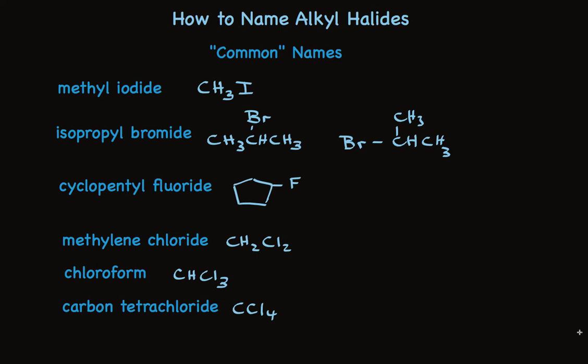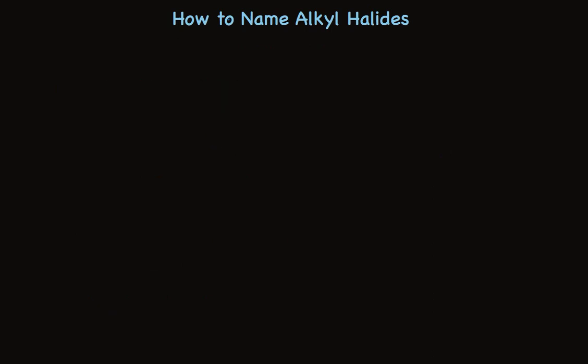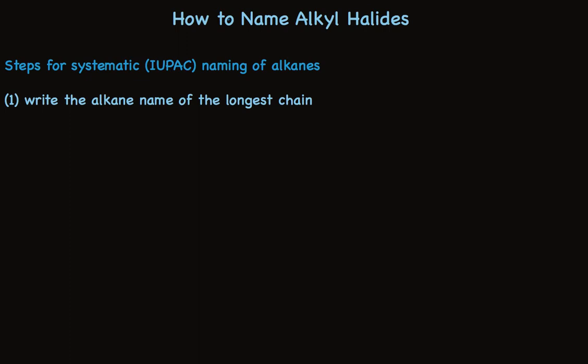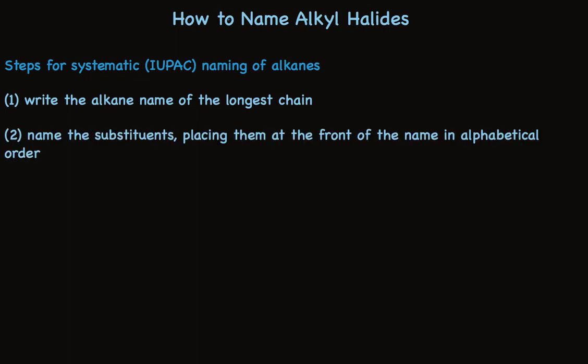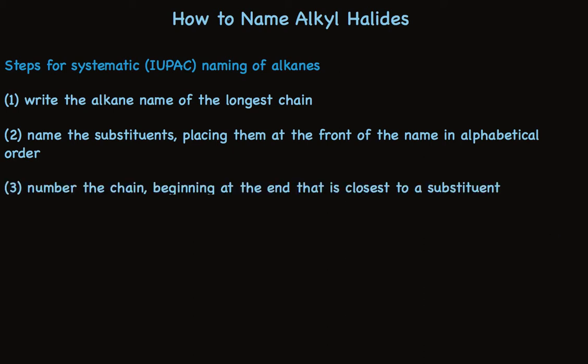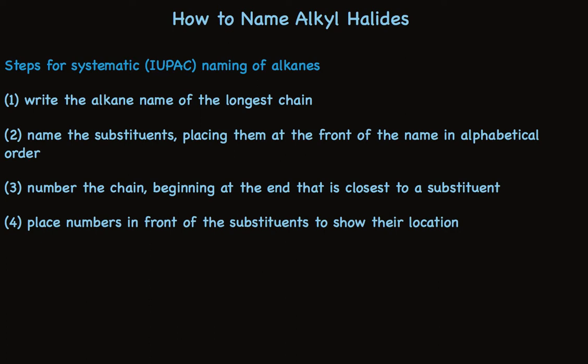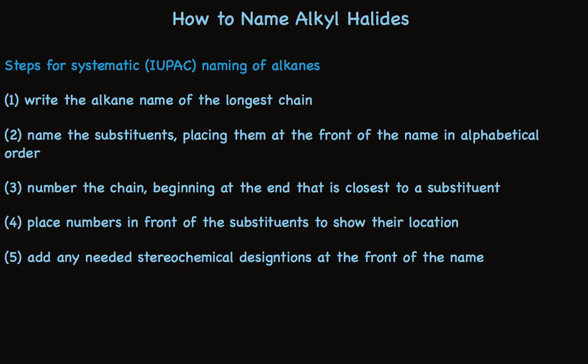Let's look at the systematic names. I have some good news: you probably already know how to use systematic nomenclature to name alkanes, and it's the same system for alkyl halides. The IUPAC system does not recognize alkyl halide as a special functional group, so these are named as alkanes with halide as a substituent. First, find the longest chain and write the corresponding alkane name. Second, name each substituent attached to that chain and place them in front of the alkane name in alphabetical order. Then number the chain beginning at the end closest to a substituent. Use the carbon numbers to indicate where substituents are. Finally, there may be stereochemical designations — R or S, cis or trans — to put at the front of the name.